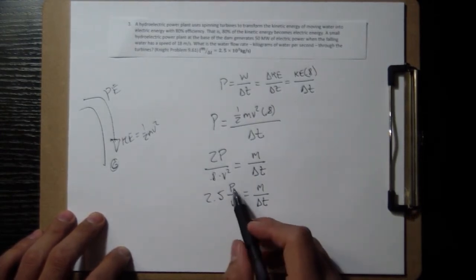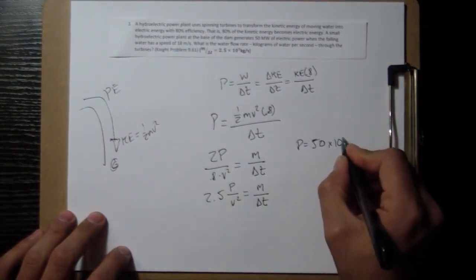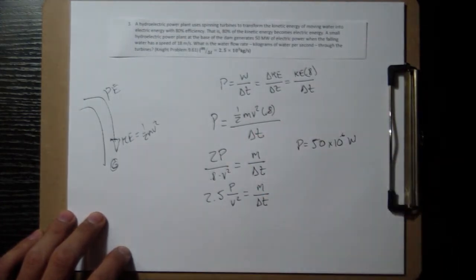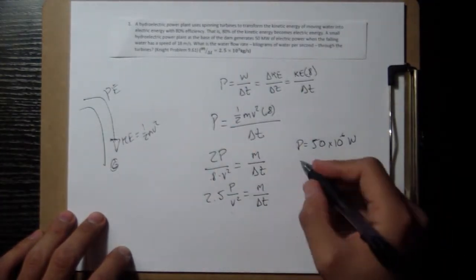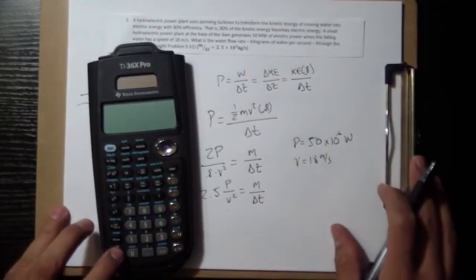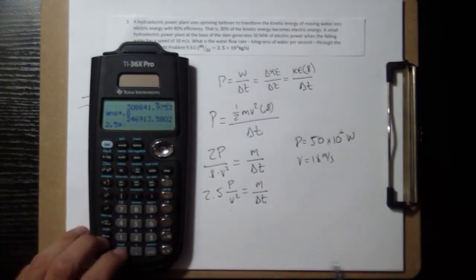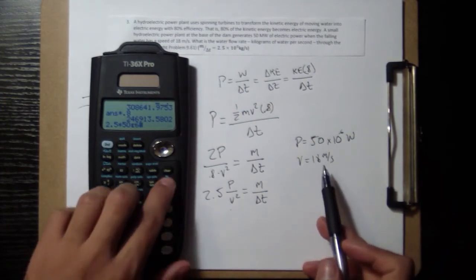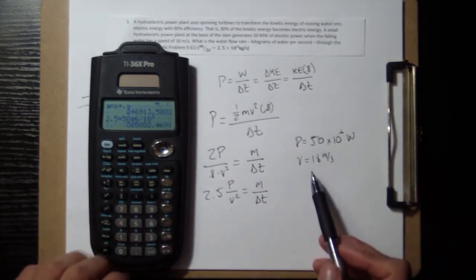Our p is 50 megawatts. Remember that mega is times 10 to the 6 watts, so that way we can have it in SI units and get everything back in SI units. And our v is 18. So we plug those in.